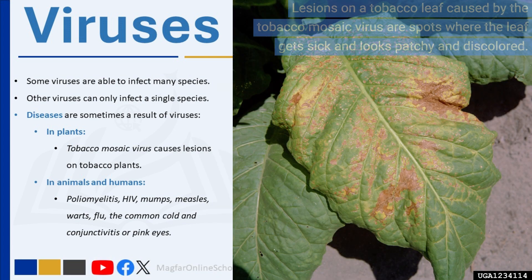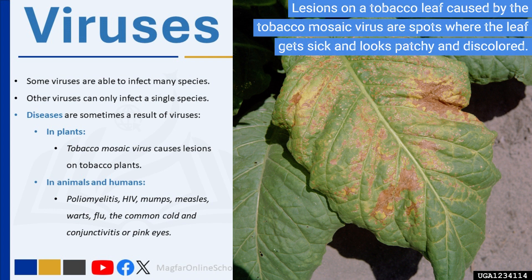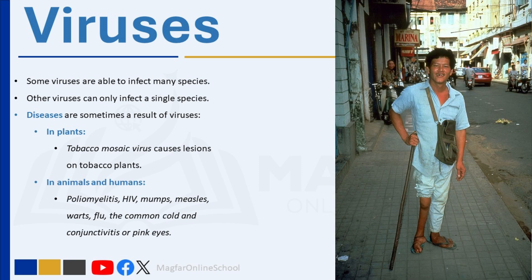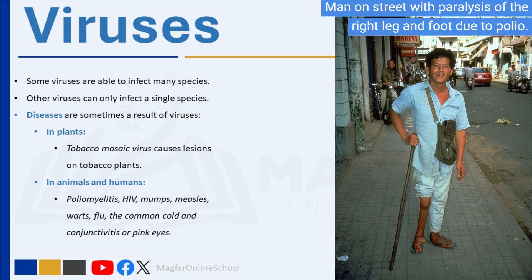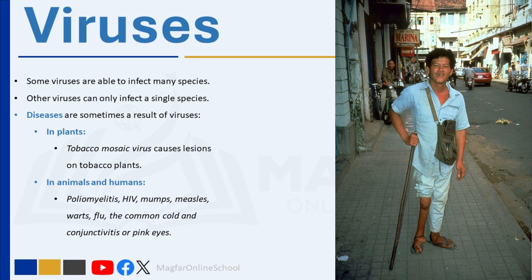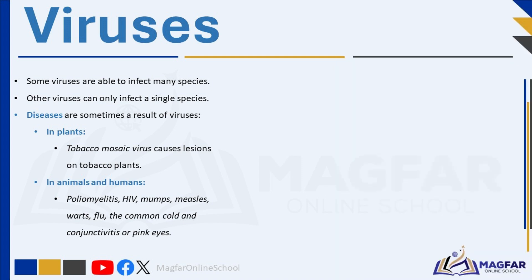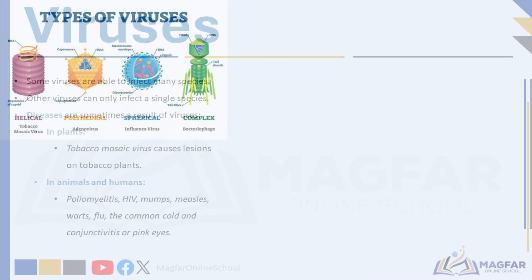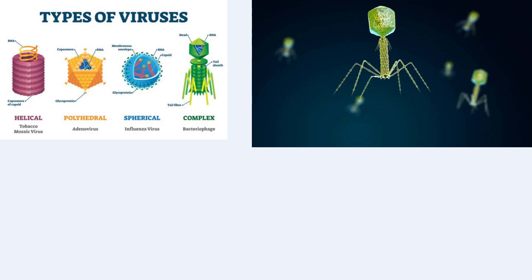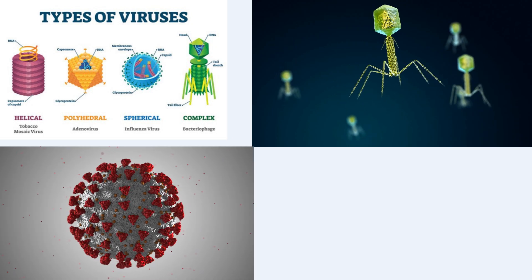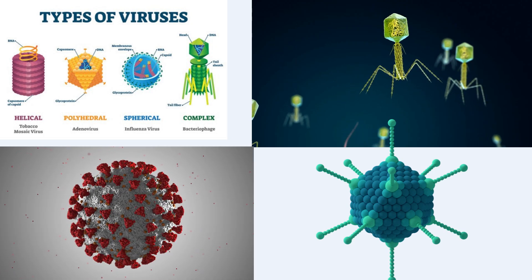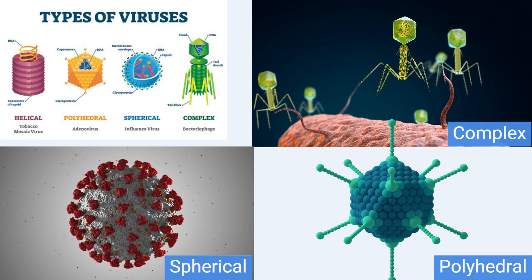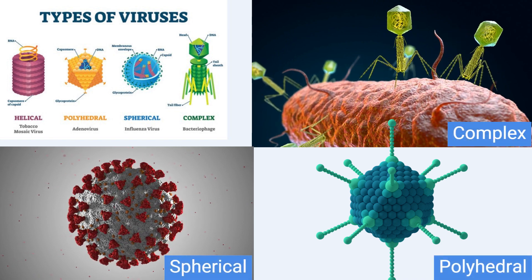Diseases and illnesses are sometimes the result of viruses. In plants, the tobacco mosaic virus causes lesions on tobacco plants. In animals and humans, poliomyelitis, HIV, mumps, measles, warts, flu, the common cold, and conjunctivitis (pink eye) are caused by viruses. Viruses can take on various shapes; the most common shapes are helical, polyhedral, spherical, and complex.